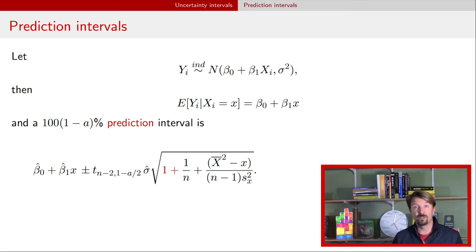Now this prediction interval is both a credible interval and a confidence interval. The credible interval interpretation is that it's your belief about where a new observation will be when x is equal to little x. It's a confidence interval in the sense that if you repeatedly use this with new data, then it will cover the true value the right proportion of the time.